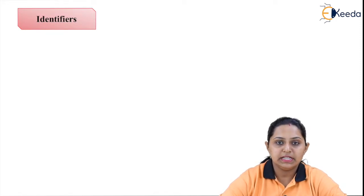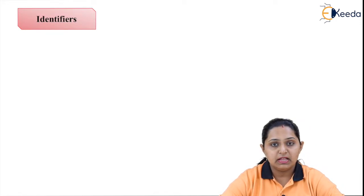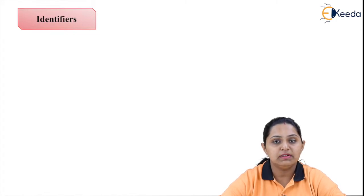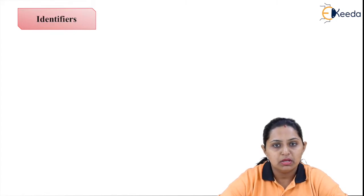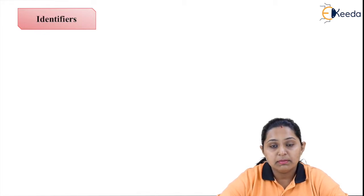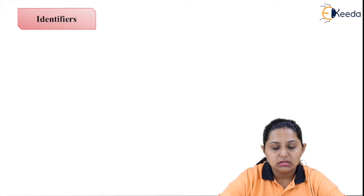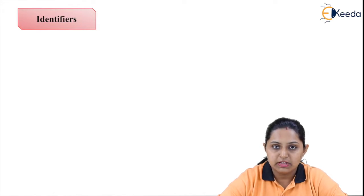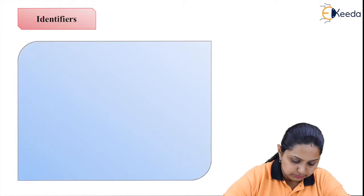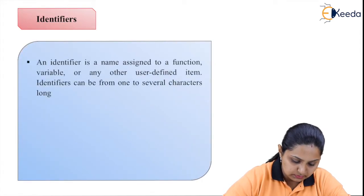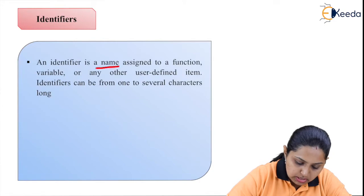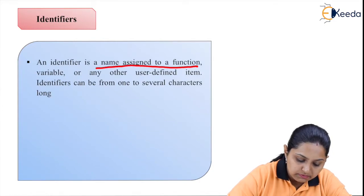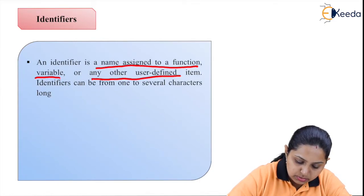Next we'll start with identifiers. As the name suggests, an identifier is the identity given to a particular value. Identity means consider you are giving a particular name to your memory location, or we can say a particular name to your method. Those identities are called identifiers. An identifier is a name assigned to a function, variable, or any other user-defined item.